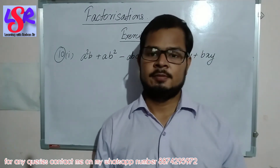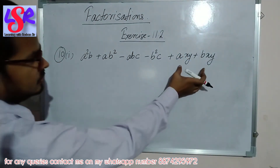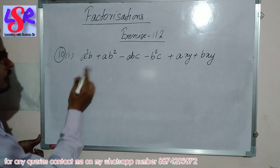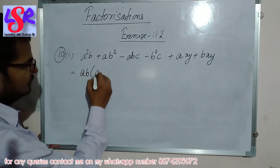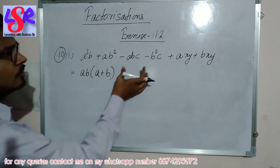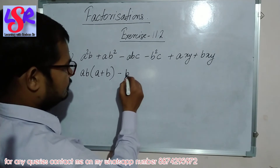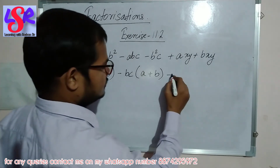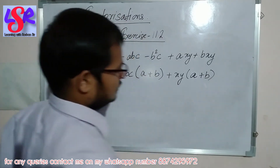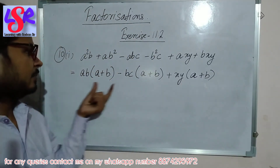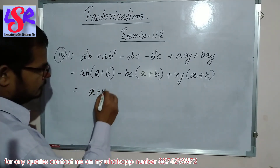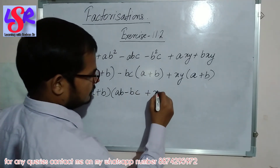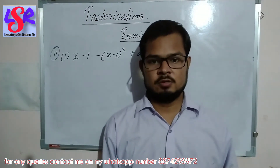Question number 10 — here we have 6 terms. From the first two we take ab as common, leaving a plus b. From the next two we take minus bc as common, leaving a plus b. From the last two we take xy as common, leaving b — wait, a plus b again. The bracket a plus b is common, so the answer is (a plus b)(ab minus bc plus xy).